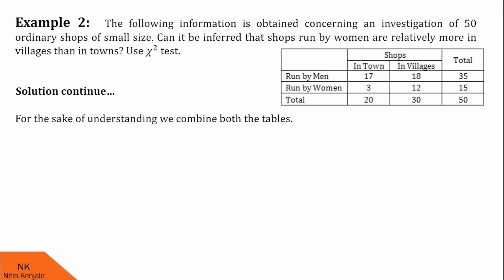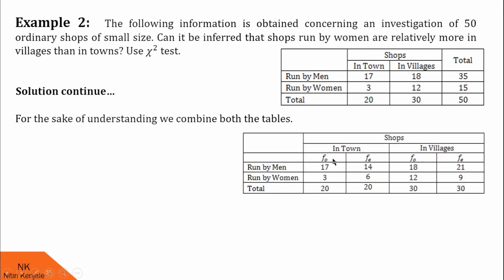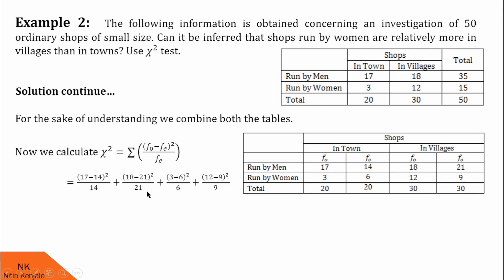Now, for the sake of understanding, I am combining both the tables. Here you can see these are the observed frequencies and these are expected frequencies. Similarly, for villages, these are observed frequencies and these are expected frequencies. Now, we will go for test statistics. Test statistic formula is chi-square is equal to summation (Fo minus Fe) the whole square upon Fe. Let me show you a couple of terms of this calculation. Fo is 17, Fe is 14. So it is (17 minus 14) the whole square divided by Fe that is 14. Similarly, Fo is 18, Fe is 21. So we will write (18 minus 21) the whole square upon Fe which is 21, and so on. Finally, using a calculator, I found chi-square value is 3.571. This is the calculated value of chi-square.